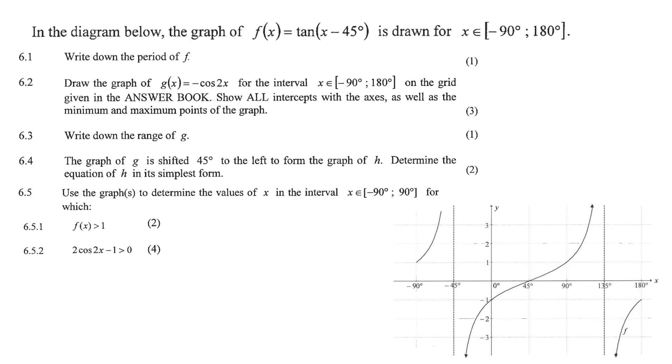In the diagram below, we have a graph of f, which is a tan graph, tan x minus 45. So here we can see it over here, and it's drawn over a domain of minus 90 up to 180.